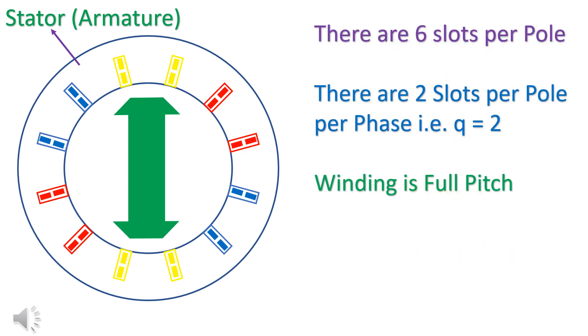There are 6 slots per pole. There are 2 slots per pole per phase. That is Q is equal to 2.